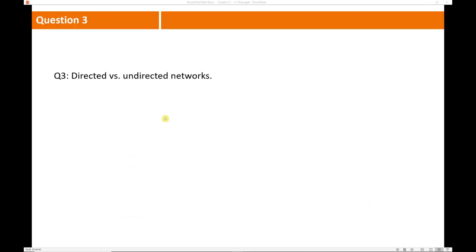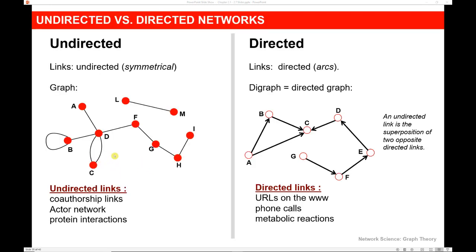We briefly mentioned directed and undirected networks — let's take a closer look. In an undirected graph, the connections are symmetrical. So if I have a connection from node F to node G, it's the same connection from node G to node F. If we see multiple edges from one node to another in an undirected graph, it's likely that those edges represent different types of relationships. We can also have a case where a node is connected to itself — for example, a self-evaluation in a company. Undirected graphs can be used for co-authorship, actors in the same movies, or protein interactions. In a directed graph, we might have asymmetry — just because A points to B doesn't mean B points to A. In a directed graph, we usually refer to the edges as arcs, and the shorthand is digraph.